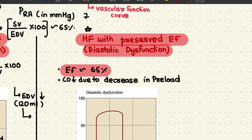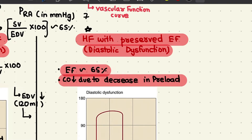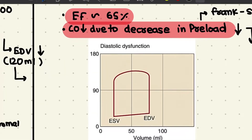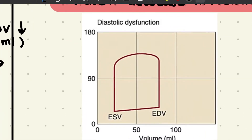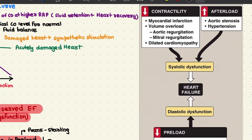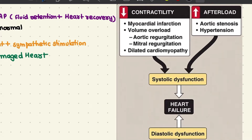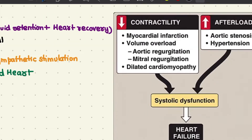Heart failure with preserved ejection fraction (HFpEF), also known as diastolic dysfunction, has a preserved ejection fraction of 65%. The decrease in cardiac output is due to a decrease in preload. According to the Frank-Starling law, a decrease in preload reduces the magnitude of contraction. In HFpEF, end-diastolic volume is quite low and end-systolic volume is also low, compensating for the reduced end-diastolic volume.